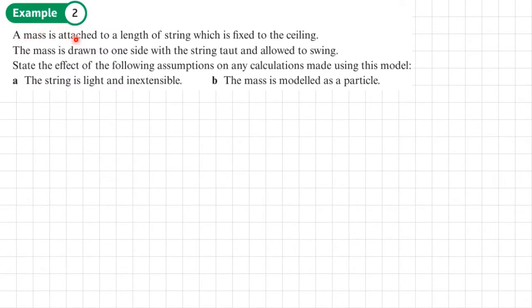Example 2. A mass is attached to a length of string which is fixed to the ceiling. The mass is drawn to one side with the string taut and allowed to swing. State the effect of the following assumptions on any calculations made using this model. So firstly, the string is light and inextensible. There are two words there we need to write the definitions of.